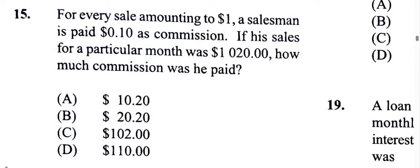A salesman is paid 10 cents commission for every $1 of sales. So for every dollar he's paid 10 cents. If his sales for a particular month are $1,020, how much commission was he paid? We can look at 10 cents as 10% — it's really 10% of a dollar.